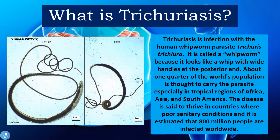Trichuriasis is the infection with the human whipworm parasite Trichuris trichiura. It is called a whipworm because it looks like a whip with wide handles at its posterior end. About one quarter of the world's population is thought to carry the parasite, especially in tropical regions of Africa, Asia, and South America. The disease thrives in countries with poor sanitary conditions, and it is estimated that approximately 800 million people are infected worldwide.